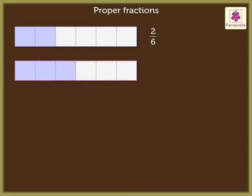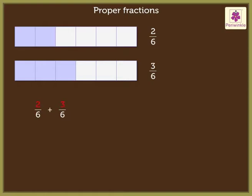In the second grid, she colored three parts of the grid out of six. Next to it she has written the fraction three-sixths. We can obtain the total portion colored in both grids by adding the fractions. As the denominators are the same, we add only the numerators.